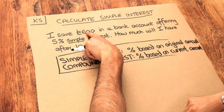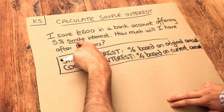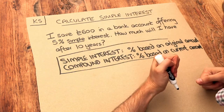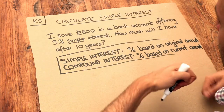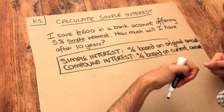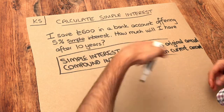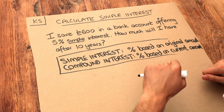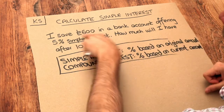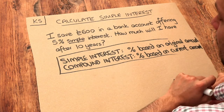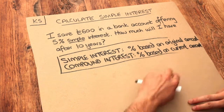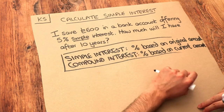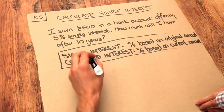So when they give you that 5% interest after one year you'll have a greater amount, but then the subsequent year they don't give you 5% of what you now have, as you would with compound interest. They just give you the 5% of that original £600 you put in. So all we need to do is work out what 5% is of £600.